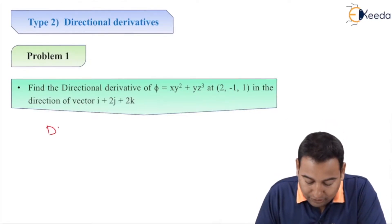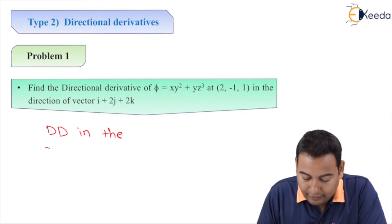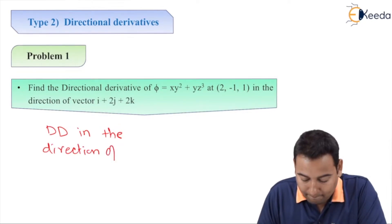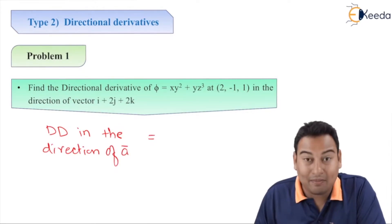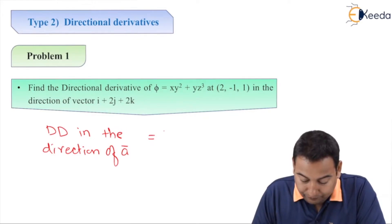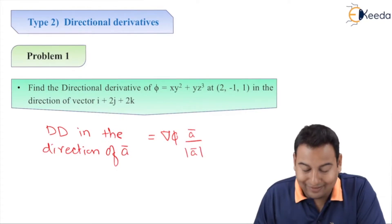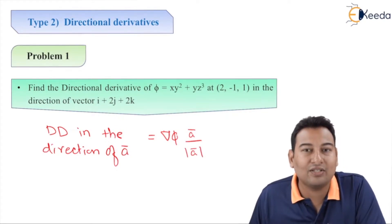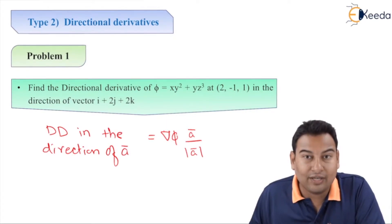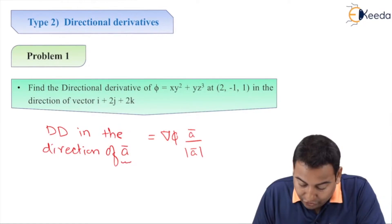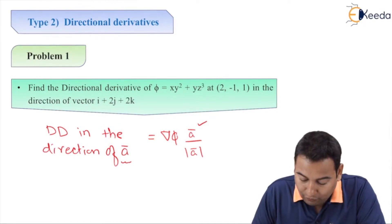Let me write the formula first. The directional derivative in the direction of vector a-bar is given by del-phi dot a-bar upon mod of a-bar. This is the formula we have already discussed in video number one.